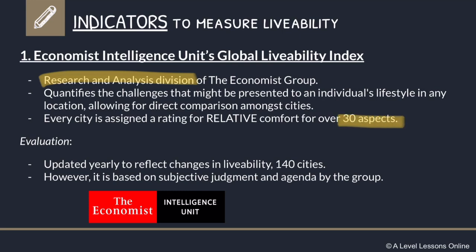For the evaluation of the Economist Intelligence Unit Global Livability Index: it is updated every single year, which is good, because many indicators only update once every two or three years, causing data to become inaccurate. It also covers 140 cities, which is quite a lot. The only issue is that it is based on subjective judgment and the agenda of the Economist Group themselves — they decide what aspects to measure, how to compare cities, and the ratings to give. So it may not be a worldwide standard.